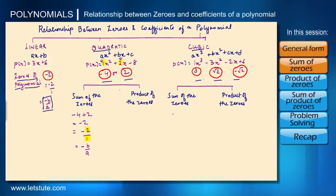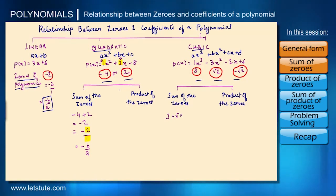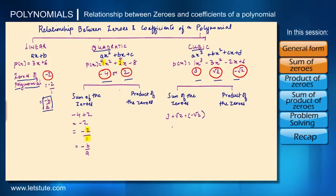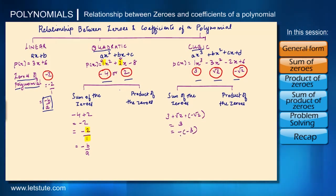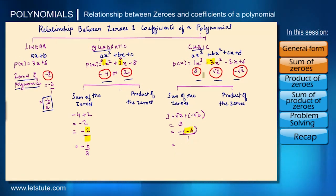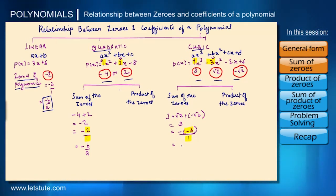Similarly, the sum of the zeros for the cubic polynomial would be three plus root two plus minus root two, which equals three. Three can also be written as minus of minus three upon one, where minus three is the coefficient of x squared and one is the coefficient of x cubed. So again this is minus b upon a.